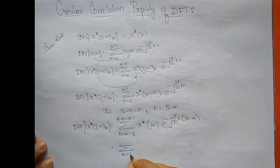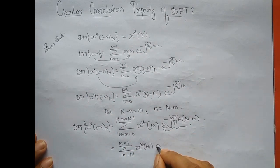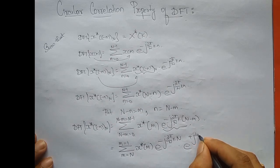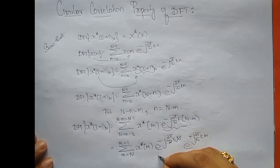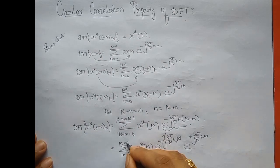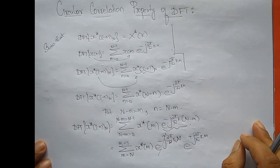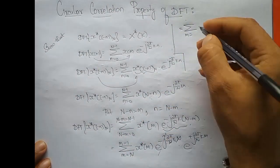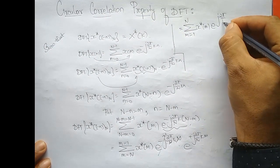We end up with summation m varying from N to 1 of x star of m. Splitting the exponential: e to the power minus j 2π/N times k times N, times e to the power plus j 2π/N times k times m. Here N/N cancels, giving e to the power minus j 2π times an integer k, which equals 1. Then I interchange the summation limits from 1 to N, written as summation m from 1 to N of x star of m times e to the power j 2π/N times k times m.